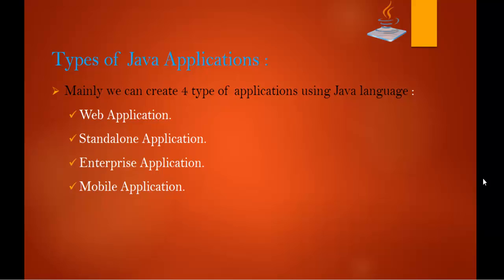So these are the types of Java applications we can build using the Java programming language. I hope you understood this clearly. In this session, we covered an introduction to what Java is and why it is called a platform, the history of how Java evolved, the different versions of Java, and the four types of applications — web, standalone, enterprise, and mobile. The coming sessions will be very interesting, as we start hands-on work with the Java language.